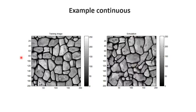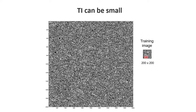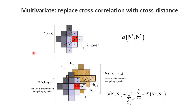Direct Sampling works with multiple variables as well. Instead of a distance between two variables in one training image, you average the distance over multiple training images and multiple variables. You can handle data conditioning by pasting observed values into the simulation grid and accounting for them during simulation. An example application is climate model downscaling: temperature, soil moisture, and latent heat have very complicated, non-linear, non-Gaussian multivariate relationships — modeling these with cross-variograms would be a nightmare. Instead, DS uses multiple training images simultaneously.